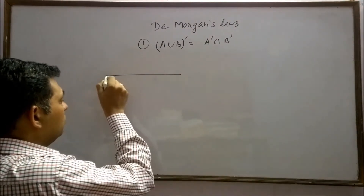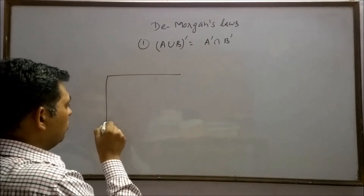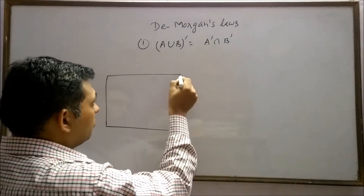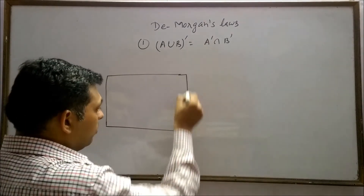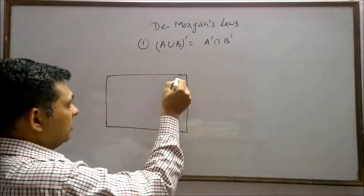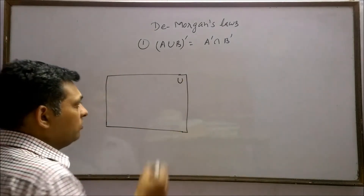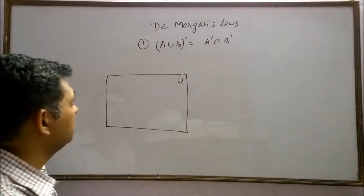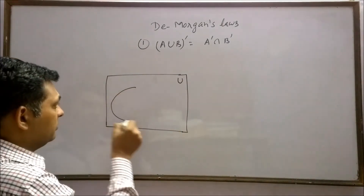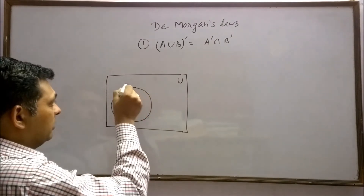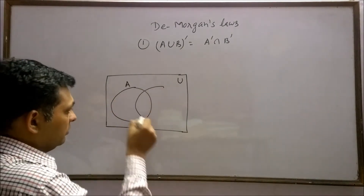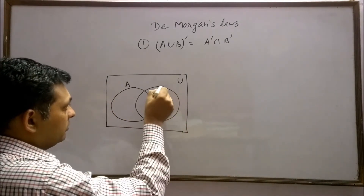Let's try to draw the Venn Diagram for the whole complement of A union B. Let this be our universal set, this is set A, and this is set B.